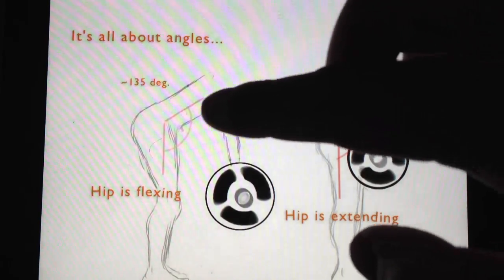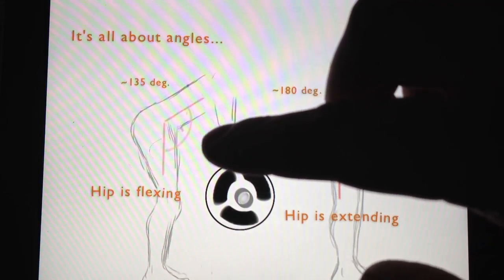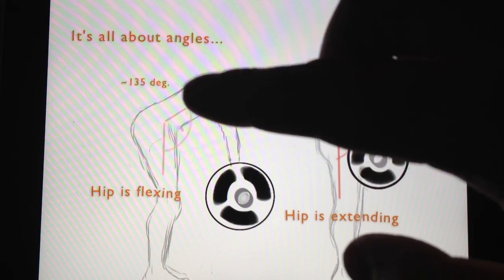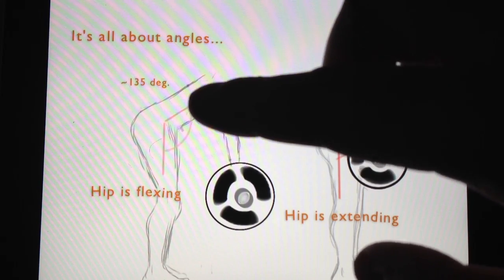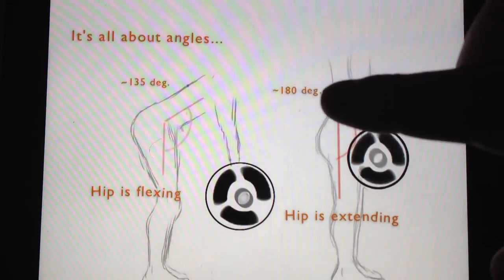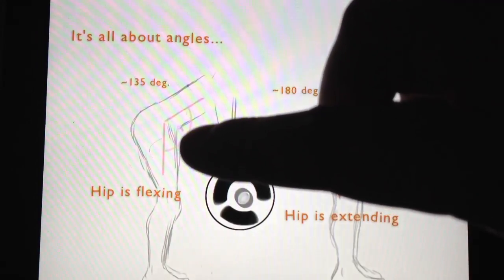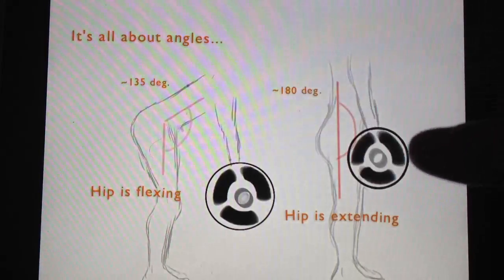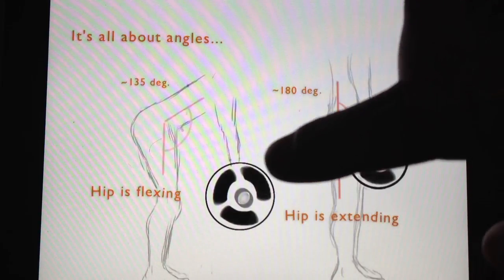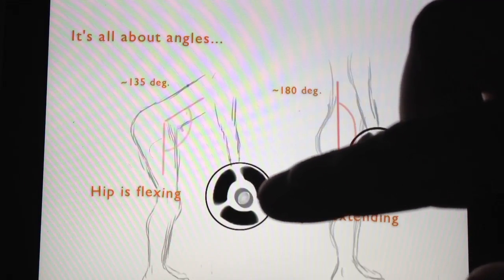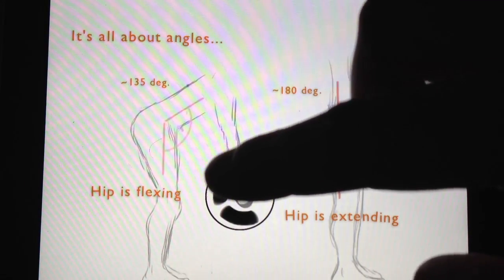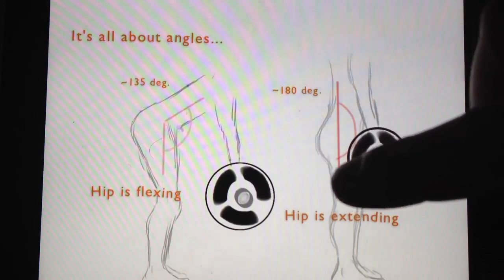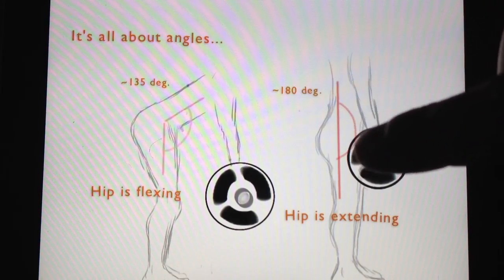But as they flex their hips, you can see that this joint angle starts to decrease. So I have an arbitrary number, 135 degrees versus 180 degrees. So here you can see that this person is actually flexing their hip. And when they're at the bottom of the movement or when they've reached the maximum amount that they can actually stretch their hamstring or flex their hip, they return to this resting position, which is an extended hip.